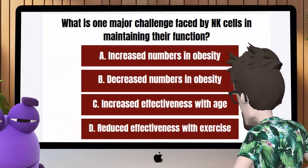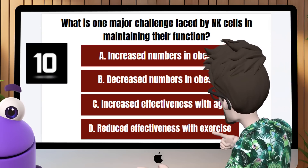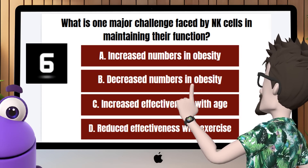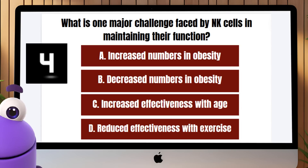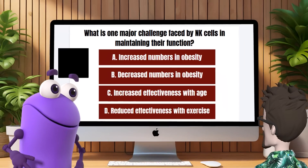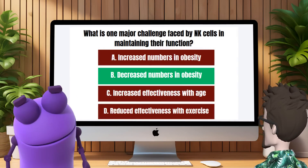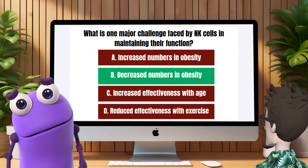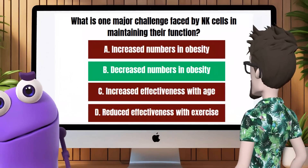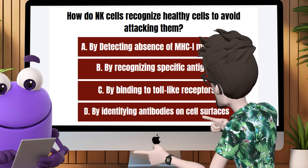Question 10: What is one major challenge faced by NK cells in maintaining their function? A, increased numbers in obesity. Actually, the correct answer is B, decreased numbers in obesity. Obesity leads to a decrease in NK cell numbers, reducing their effectiveness in immune defense.